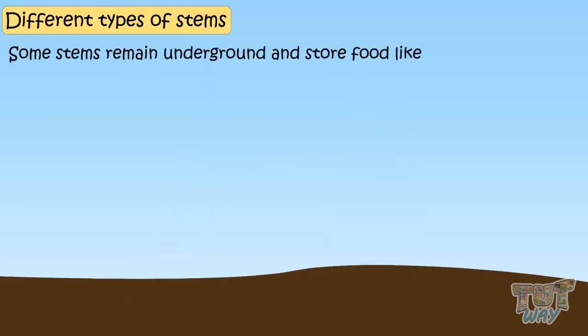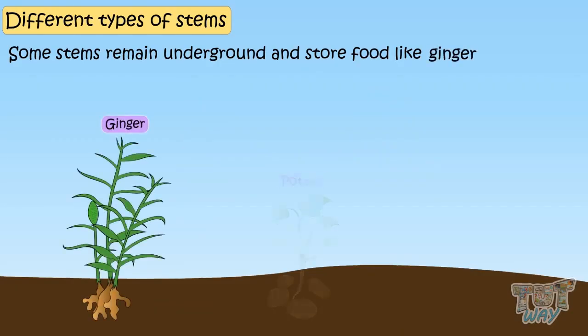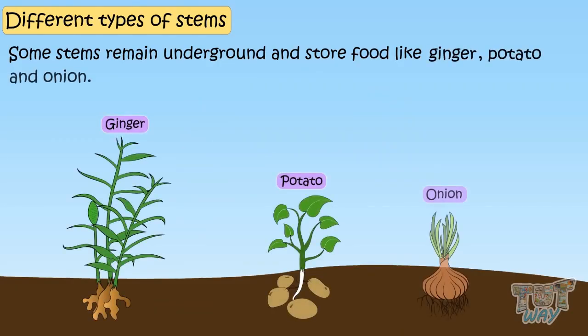Some stems remain underground and store food like ginger, potato and onion. These are actually stems that we eat.